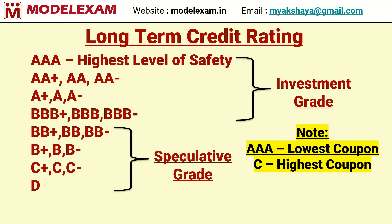AAA-rated bonds carry the lowest coupon or lowest interest payments because of the highest level of safety they offer, compared to D-rated bonds. As the rating comes down, the coupon increases — that is, the interest payment increases — because investors generally demand higher returns for the risk they take. So as the rating moves down from AAA to AA to A, the coupon will also increase. In the next part we will see the short-term credit rating.